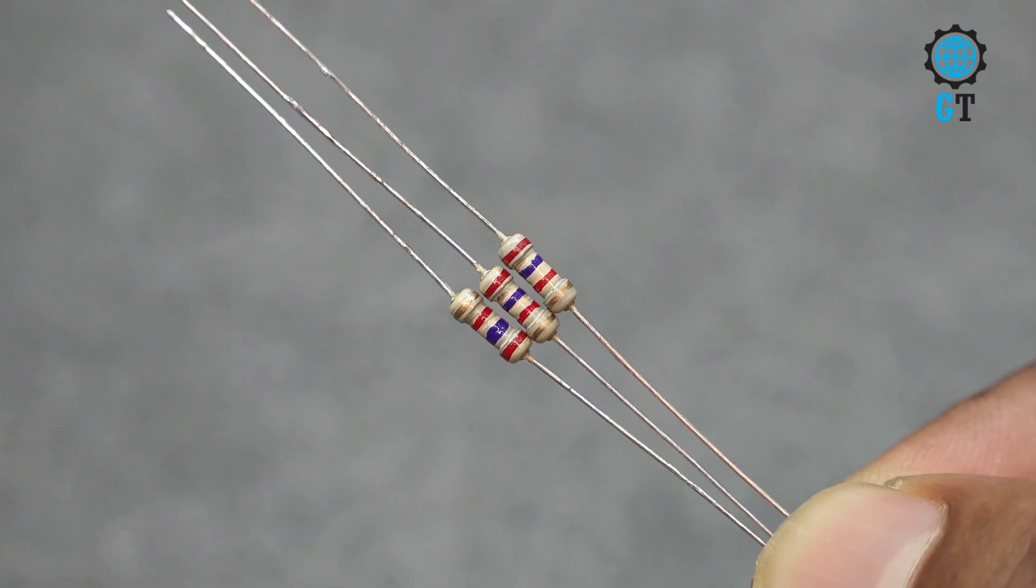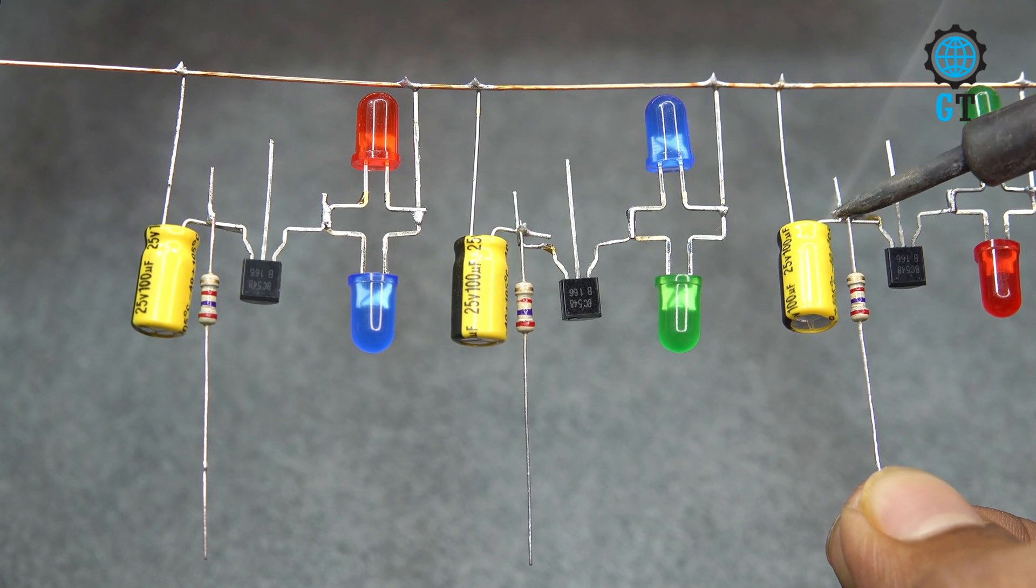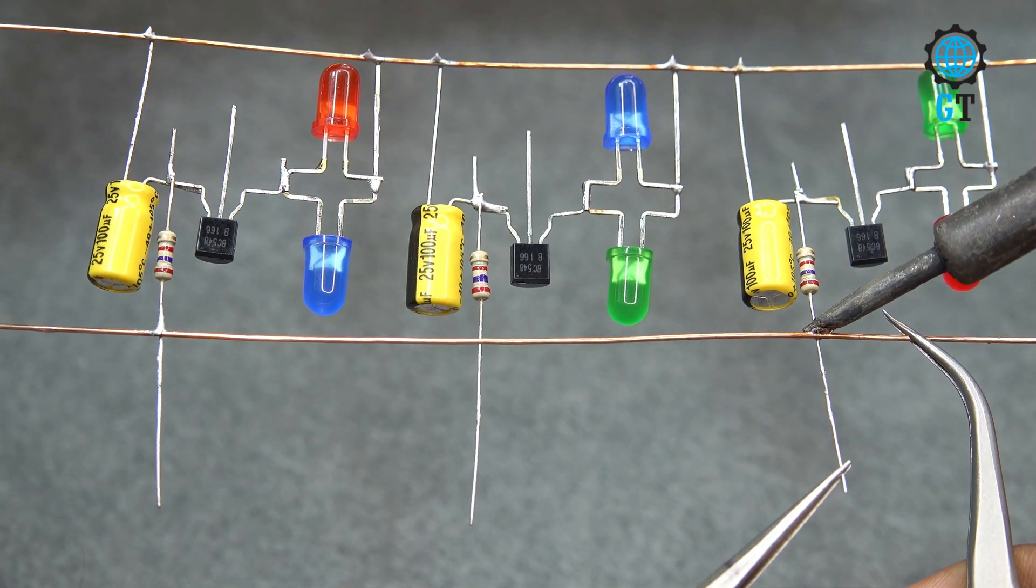To complete this circuit, now we need 3 resistors, its value 2.7 kilo-ohm. We connect this resistor with the capacitor positive leg. Now we connect copper wire with the empty terminal of the resistor.